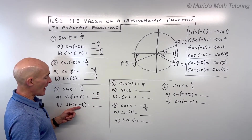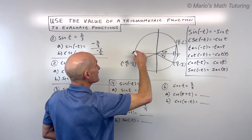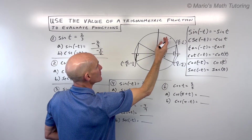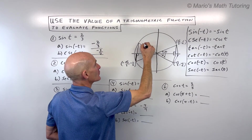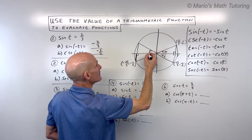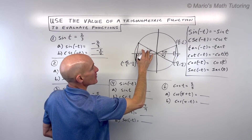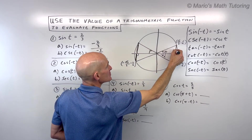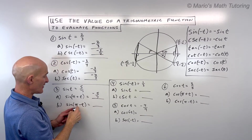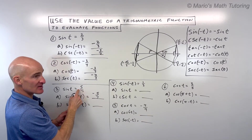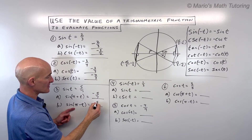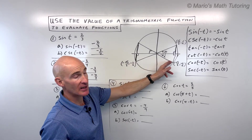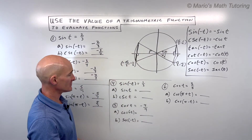Now, sine of pi minus t: pi is 180 degrees, and minus t means going clockwise, whatever that angle is. That puts us in the second quadrant. These two triangles are congruent, and the y component here is the same as the y component there — both positive. So sine of pi minus t is going to be the same as sine of the original angle: 5 sevenths. You can use reference angles like 30, 150, 210, and 330 to help you with these.